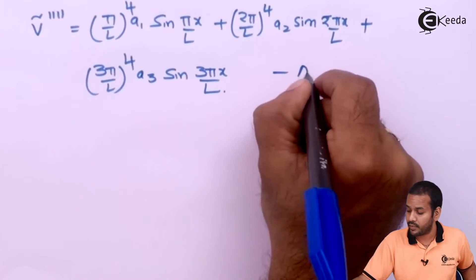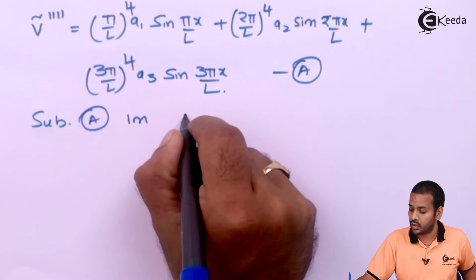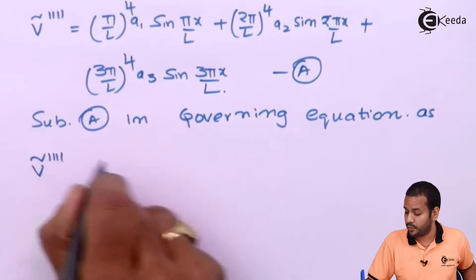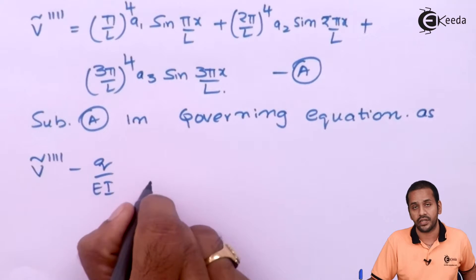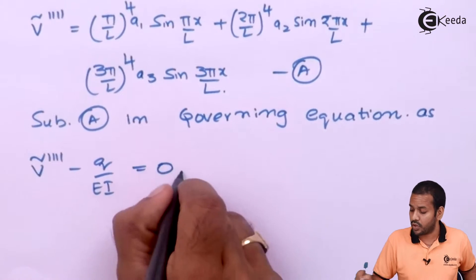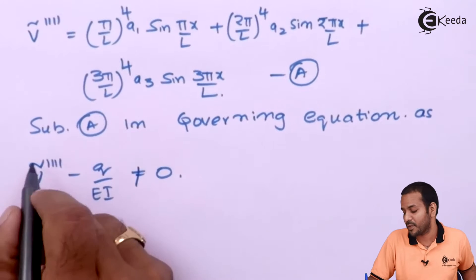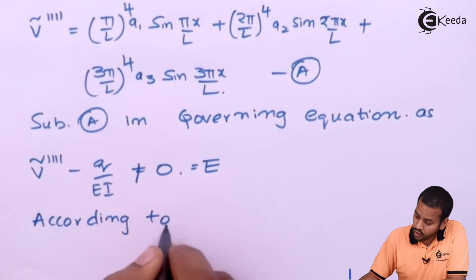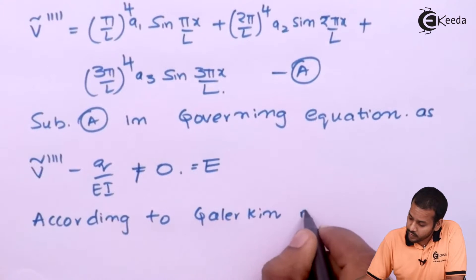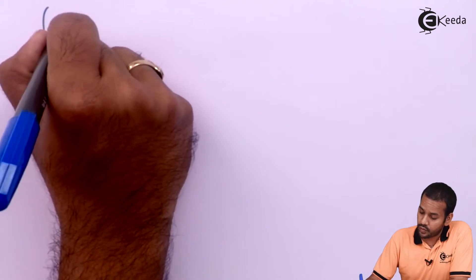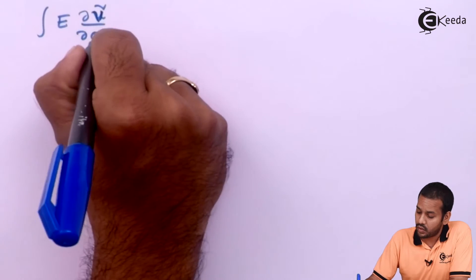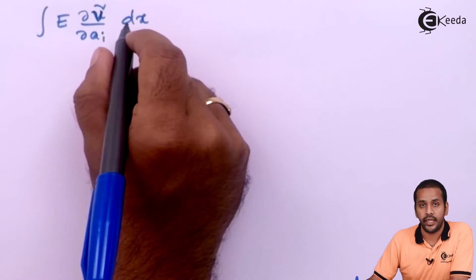Let us substitute this (call it capital A) in the governing equation: Ṽ'''' − Q/EI = 0. Because we are substituting a trial solution in place of V, this will not equal zero — this non-zero remainder is our error. According to the Galerkin method, we make the error zero in the integral sense: ∫ E · (∂Ṽ/∂Aᵢ) dx = 0, where i = 1, 2, 3.